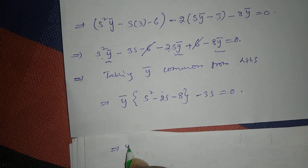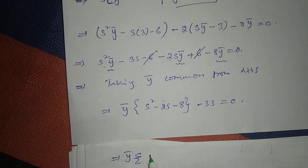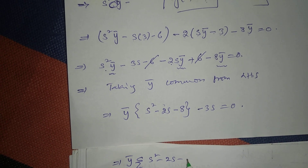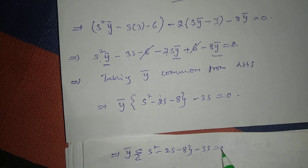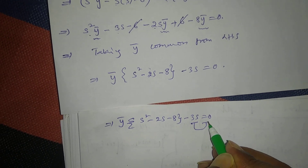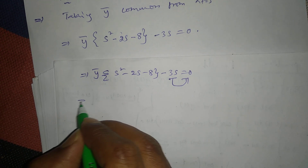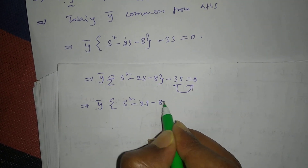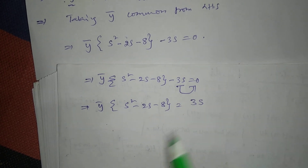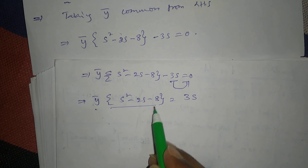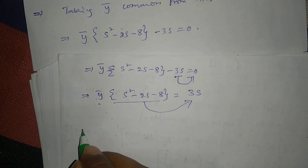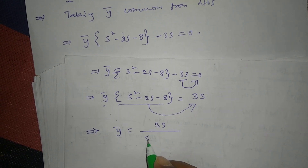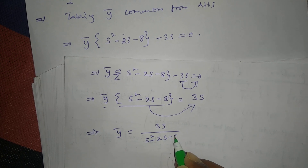That gives ȳ·(S² - 2S - 8) = 3S. We need to find only ȳ, so dividing: ȳ = 3S / (S² - 2S - 8).